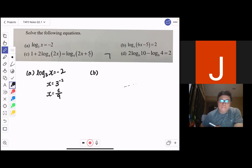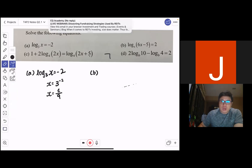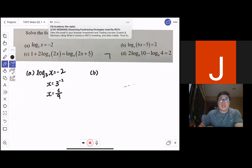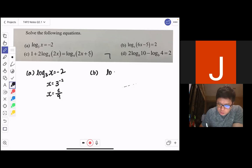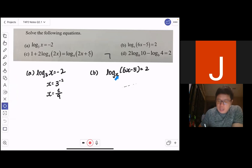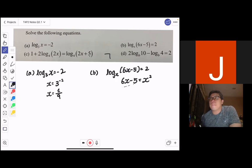So for (b), we are looking at log_x(6x - 5) = 2. So I think this question, based on my humble answer, most of you should have no issue with it in the lesson as well. So basically, if I were to change it into the index form, I can bring my x over to the right-hand side and change it into the index form. This gives me 6x - 5 = x².